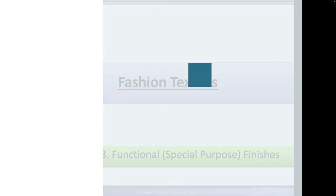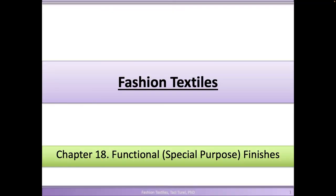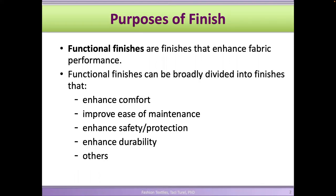Today we're going to talk about the last part of finishes. These are going to be functional finishes. We talked about aesthetic finishes in our previous class, where we change the textiles aesthetically — we change the hand, the drape, the texture, the color of the fabric. In functional finishes, we don't necessarily change the appearance of the fabric but we enhance the performance of the fabric.